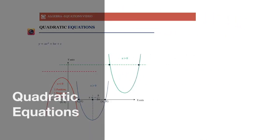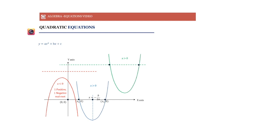A quadratic in x is a polynomial in x of degree 2. For example, f(x) = x² + 3x − 7. The degree of this polynomial is 2 because that is the highest exponent. When we represent this on the xy-axis, x is the independent variable, and whatever result we get when we put any value for x is f(x), which we represent on the y-axis.